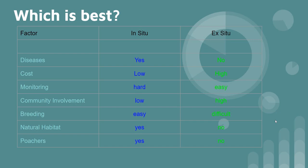Which is best — in situ or ex situ? It depends on your point of view. Think of it as a wildlife preserve versus a zoo. In situ areas will have diseases, whereas in zoos you can control disease, though the cost is very high. Monitoring is very easy in a zoo but hard in a wilderness area. There's community involvement in a zoo, however breeding is extremely difficult there. In a wildlife preserve, you can control poaching. So there are genuine pros and cons to each approach.